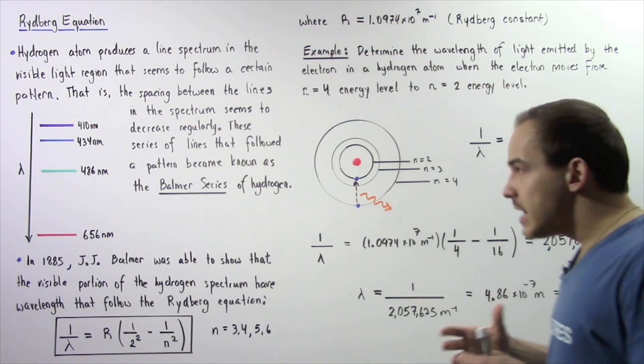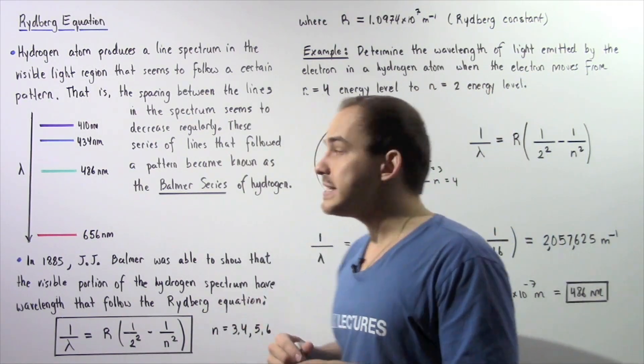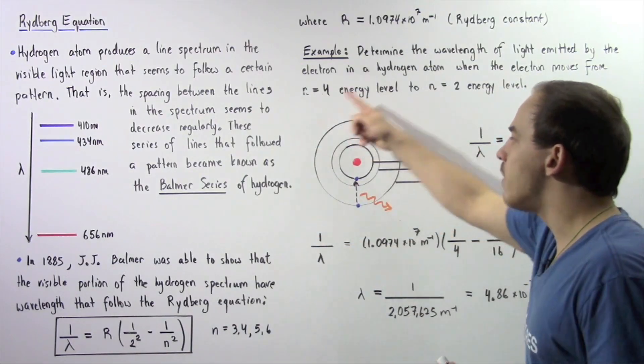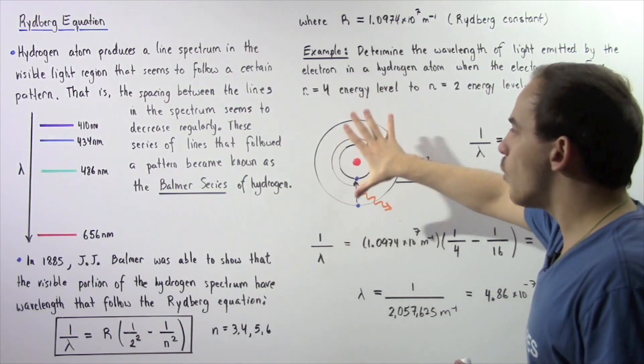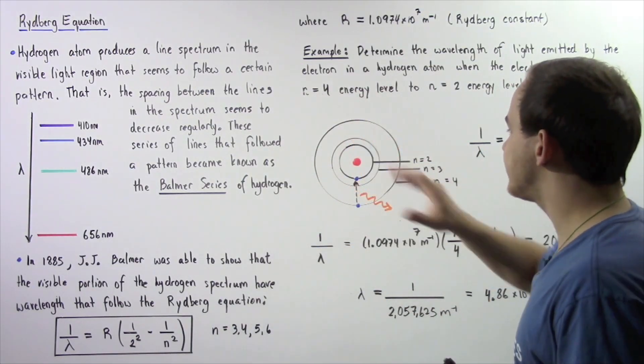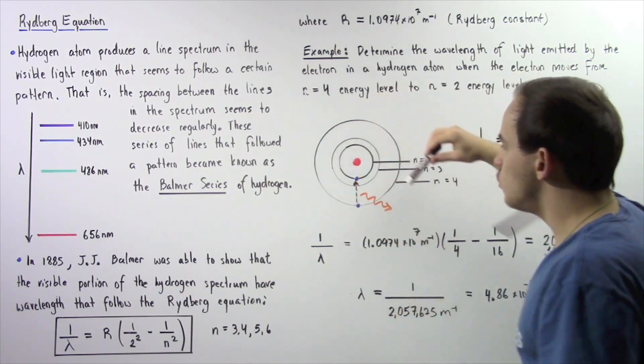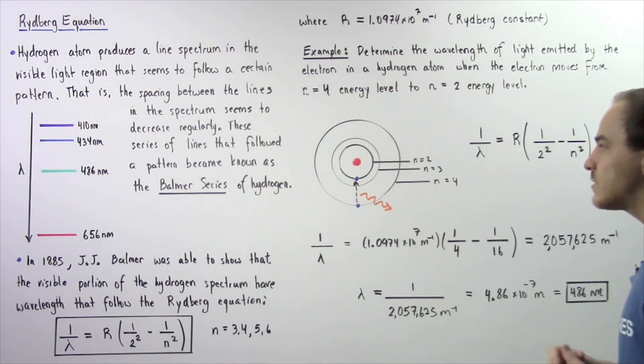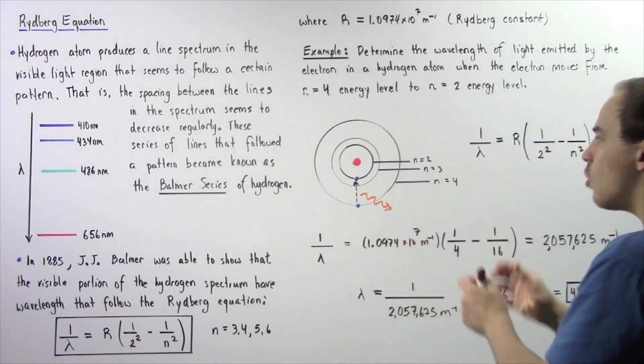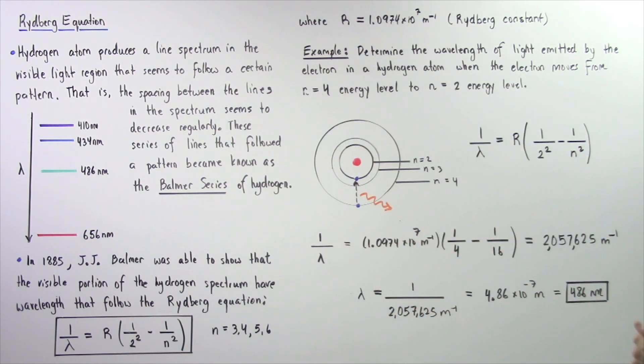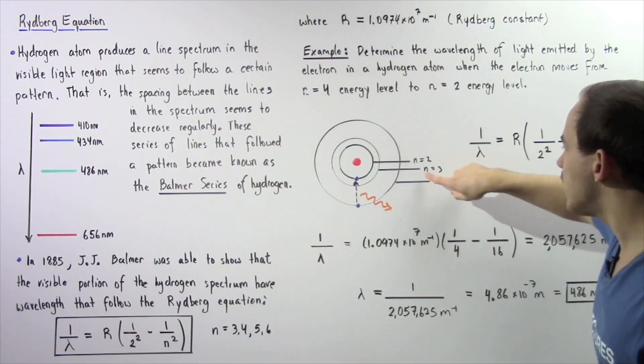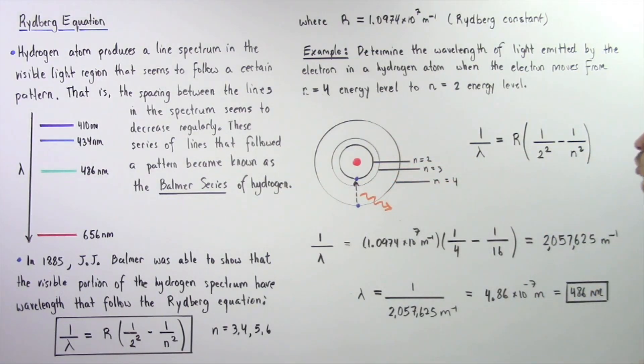Remember, the line spectrum of an atom can be explained using the Bohr model of the atom. So the Bohr model of hydrogen is depicted in the following diagram. So we have the proton in the nucleus and we have our electron. So we only show three different energy levels. We have n equals 4, n equals 3, n equals 2.